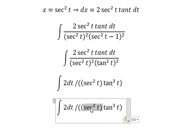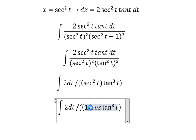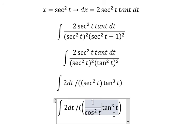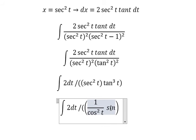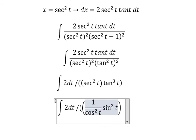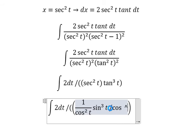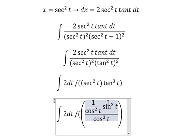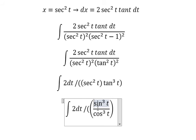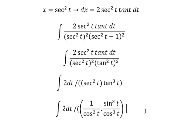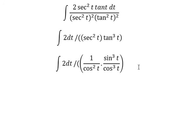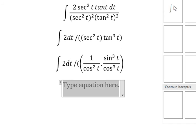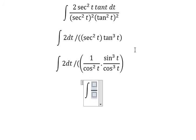Next, secant of t squared is changed to one over cosine t squared, and the expression becomes sine t to the power of three over cosine t to the power of three. So now we get the integral of cosine t to the power of five.